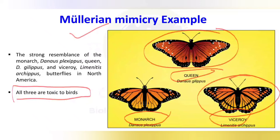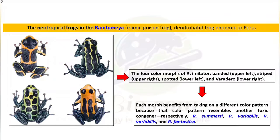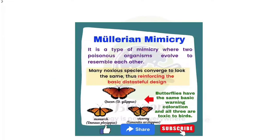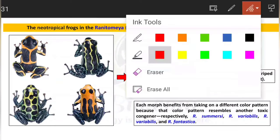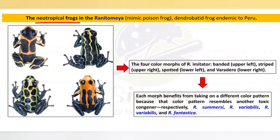Another very good example comes from research papers, which you may not find in standard textbooks. This is the Neotropical Frog example. This is a Neotropical Frog that is endemic to Peru and is called the Mimic Poisonous Frog — it is very poisonous and endemic to Peru.